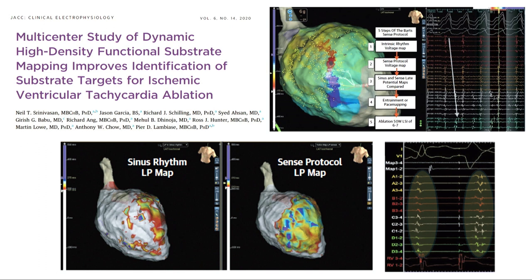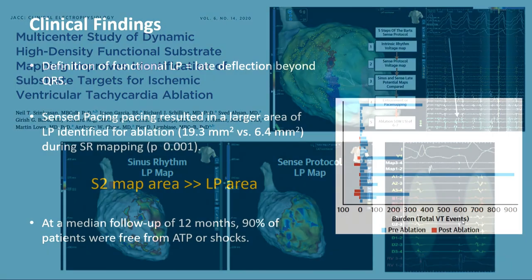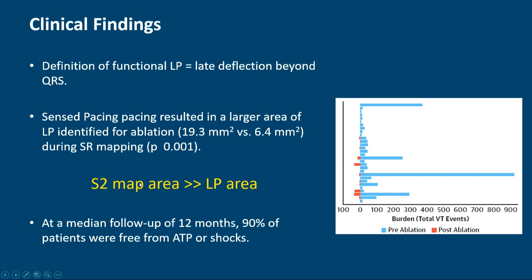The London Barts group delivered a single extra stimulus—the Barts sensing pacing protocol. From a sinus beat with very little fractionation, a sensed extra unmasks these late potentials. However, the area targeted with the extra was much greater, because by creating a late potential map of the S2, you're not mapping decrement or delay from S1 to S2—you are simply mapping what is late with the S2.